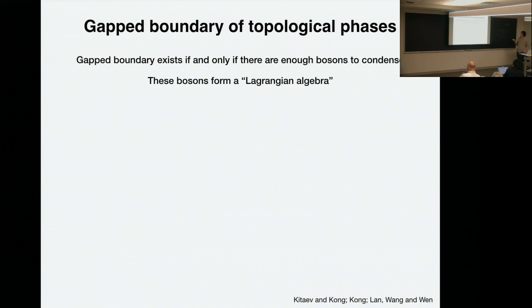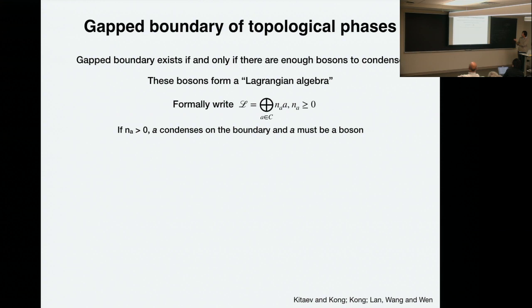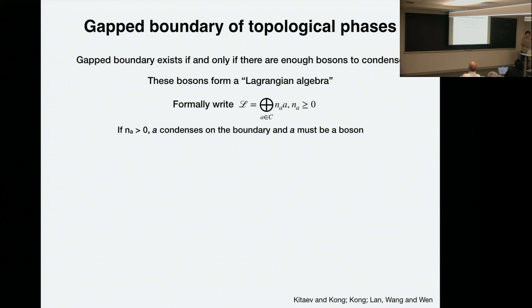A gapped boundary can exist if and only if you have enough bosons to condense. If you can find enough bosons to condense to kill the whole topological phase, then you have a gapped boundary. That also means you can condense these bosons to transition out of this topological phase to a trivial state. It's not enough to just say these are bosons — obviously they have to braid trivially with each other, so that they can form a condensate. The more precise term is that these bosons have to form a Lagrangian algebra — those are all the conditions you need to make sense of this condensation.